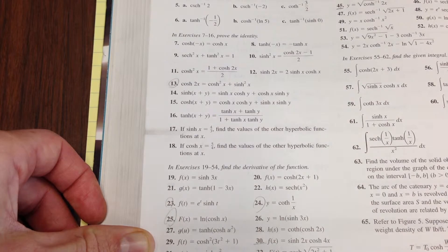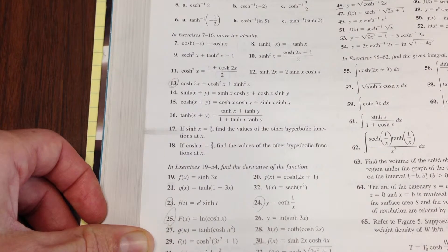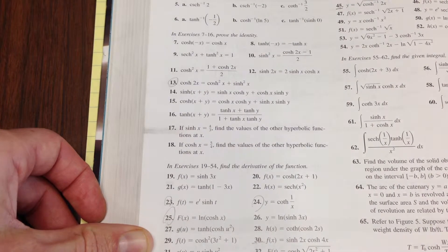I'd like to work problem 30. That asks you to find the derivative of the function f of x equals sinh, or hyperbolic sine, of 2x, times cosh, or hyperbolic cosine, of 4x.